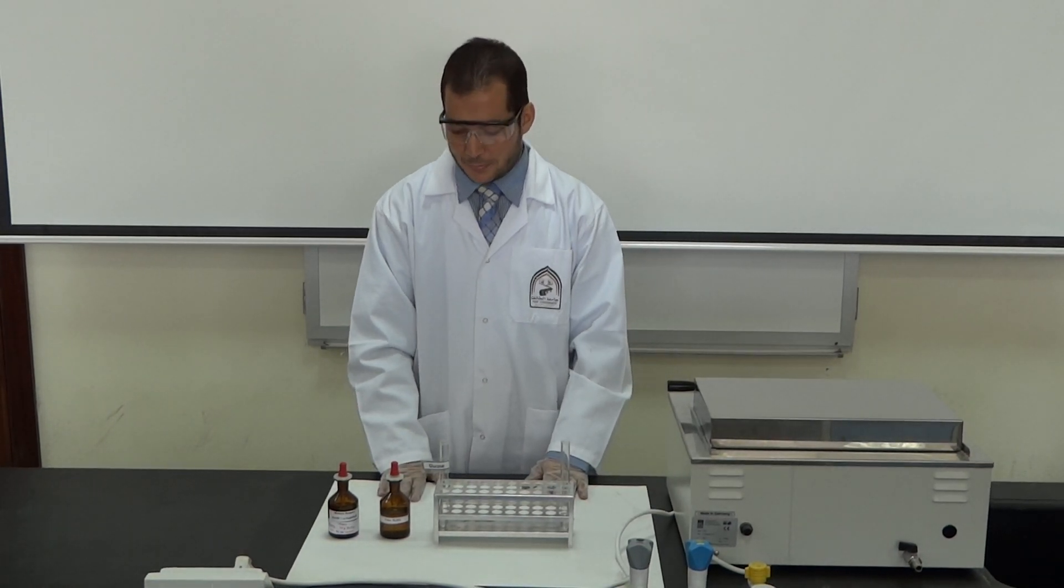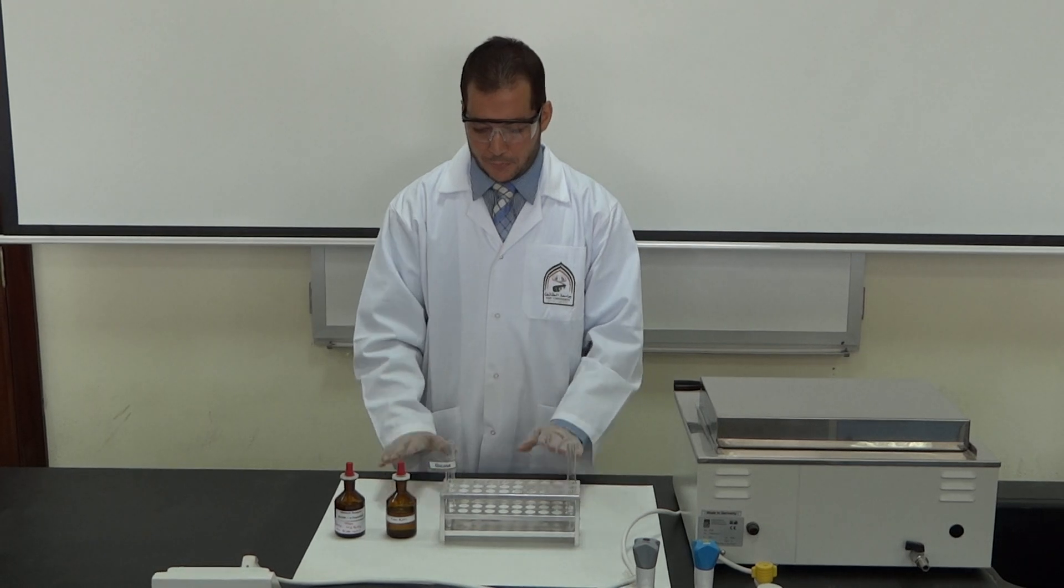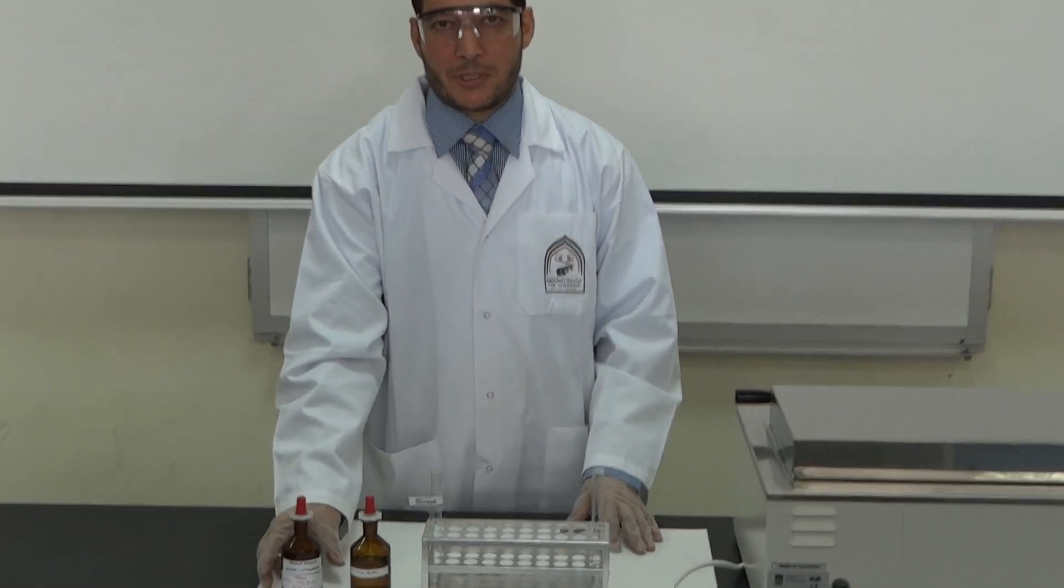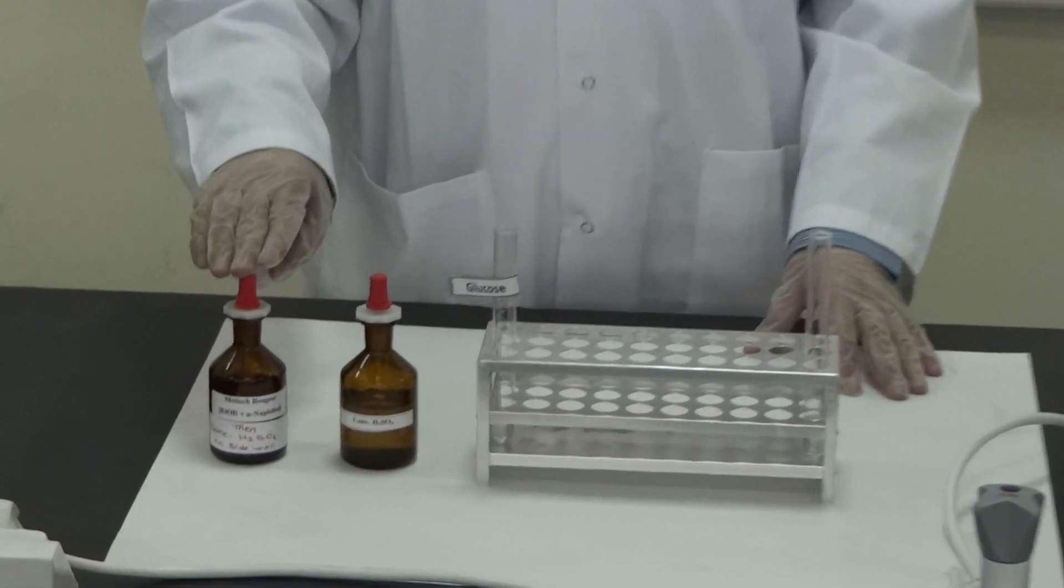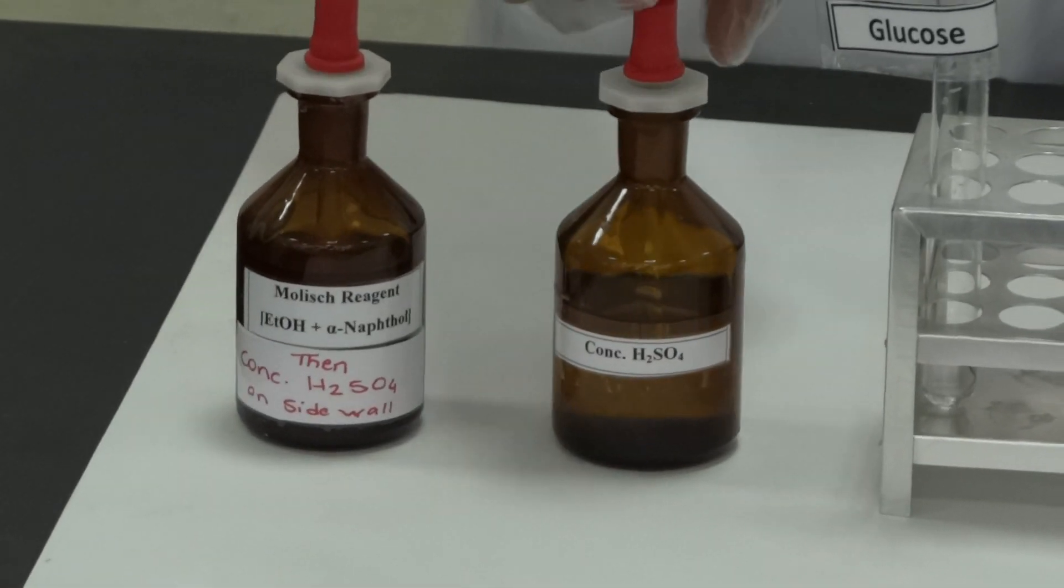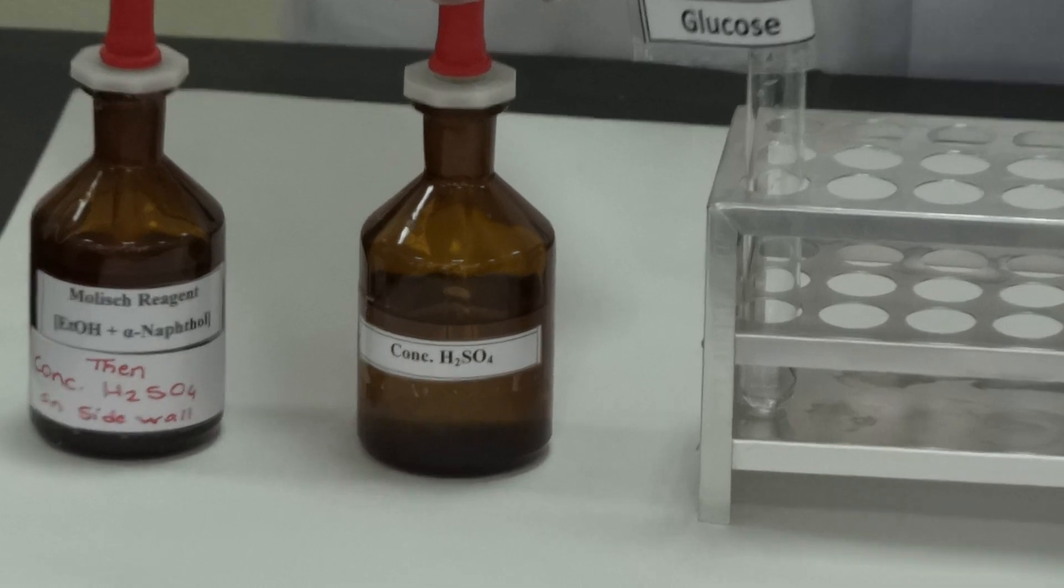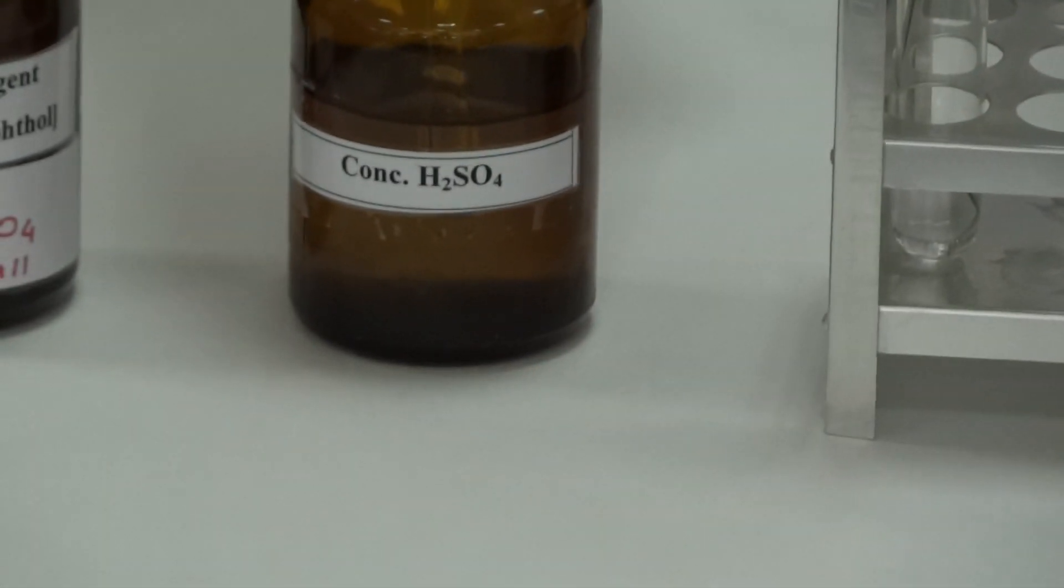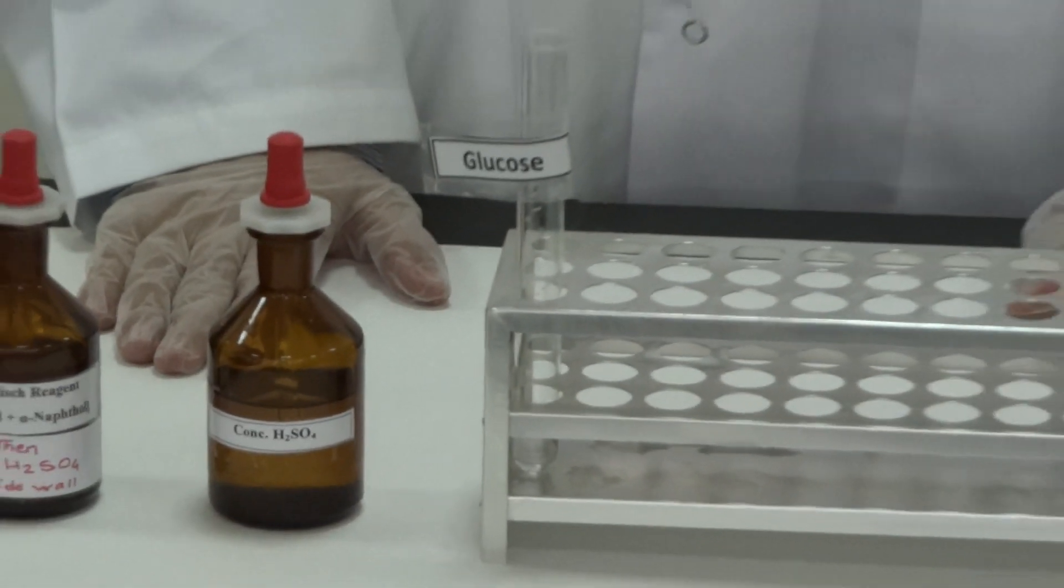So let's do a Molisch test. For starting a Molisch test, it should have a Molisch reagent, which is alpha-naphthol in ethanol. And here, concentrated sulfuric acid. So, what are we going to test?